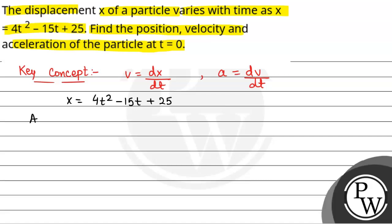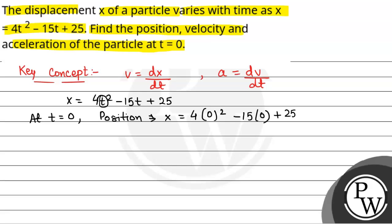At t is equal to 0, which is our position, that will be equal to x. At t is equal to 0, position will be x is equal to 4 into 0 squared minus 15 into 0 plus 25. So that will be 25 meters. This is the position at t is equal to 0.